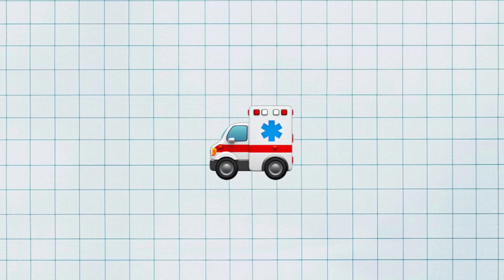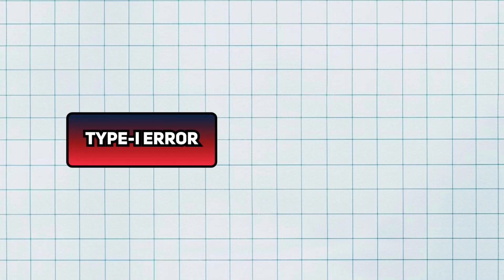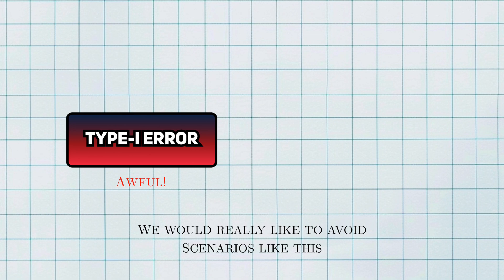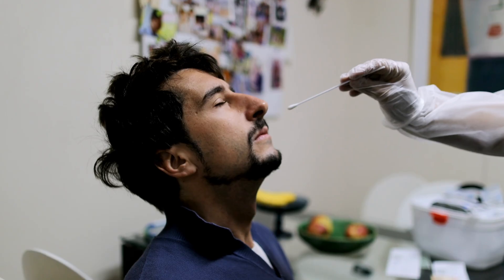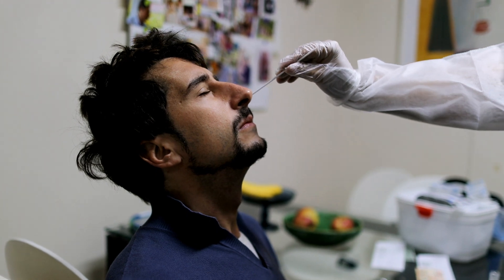But now consider a scenario where the side effects are severe — severe enough to send someone to the hospital or even worse. Think chemotherapy. A type 1 error for new chemotherapy would be awful. Anyone taking it would get all of the side effects with none of the benefits. In this case, we'd really want to be sure that the treatment is actually effective to justify the harms that come with it. This would justify setting a stricter level. In fields like biostatistics, sometimes people are the data, so that needs to be taken into account with hypothesis testing.